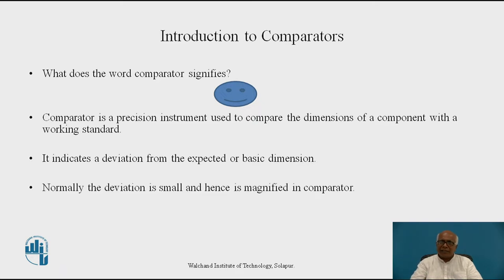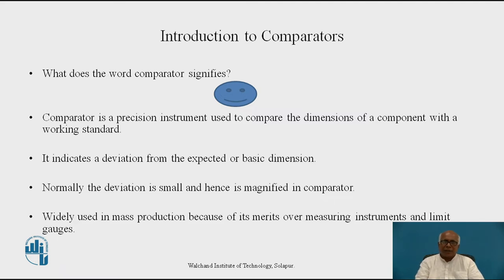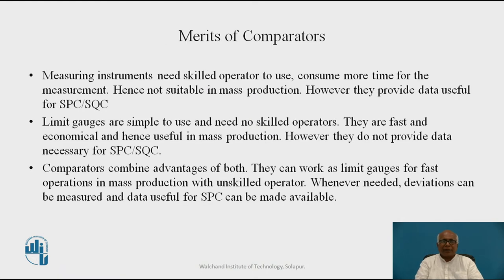Normally the deviation is small and hence it needs magnification, so it is magnified in the comparator. It is widely used in mass production because of its merits over measuring instruments as well as limit gauges. Let us see what are the merits of comparators.